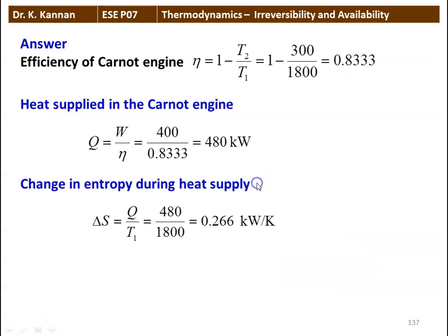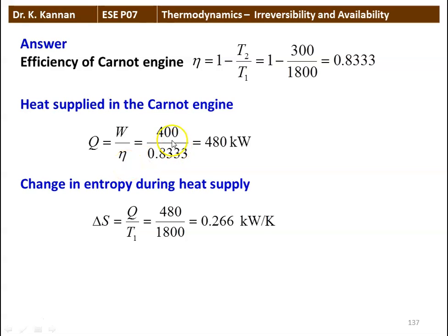Here is the solution. The efficiency of the Carnot engine: Eta equals 1 minus T2 by T1, which is 1 minus 300 by 1800, equal to 0.8333. The temperatures are substituted in Kelvin. Heat supplied Q equals work done divided by efficiency Eta: 400 divided by 0.8333 equals 480 kilowatts. The change in entropy during heat supply: delta S equals Q by T1, so 480 divided by 1800 equals 0.266 kilowatts per Kelvin.